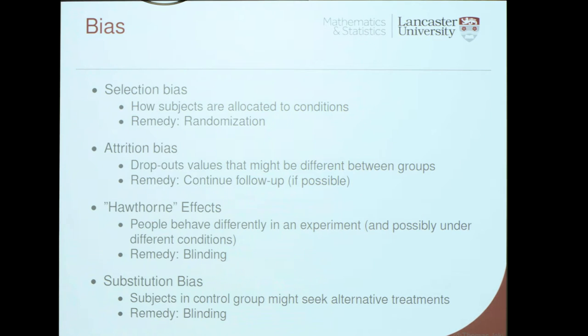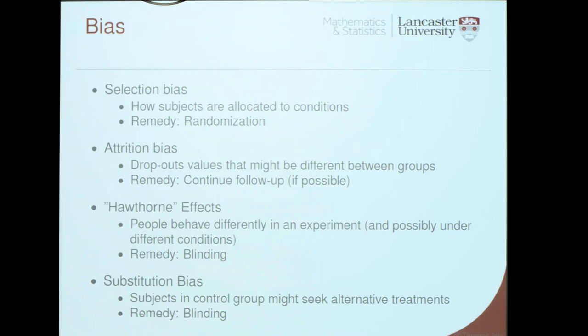Thinking about bias: there are different types, and fairly straightforward ideas to adjust for them. The first is selection bias — who enters the study and who gets assigned to which condition. The simplest way to deal with that is to randomize. What we want to avoid is the investigator systematically choosing the patient who's probably going to benefit from the treatment anyway to be assigned to one group, because it will bias our results.